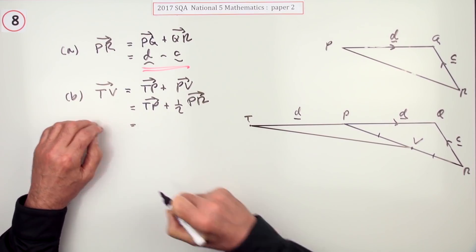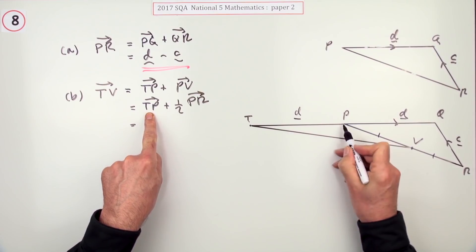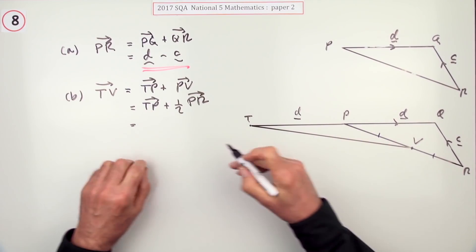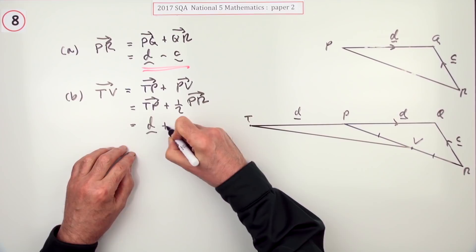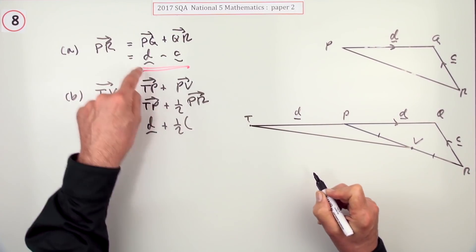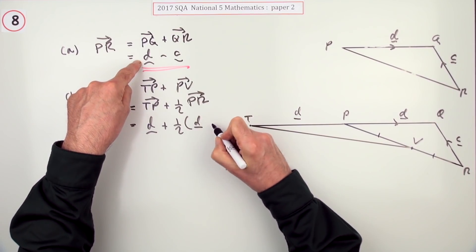Now I can just fill in the bits. TP it said was the same length same direction, so TP is still the move d. PR was made up of two parts so I better put it in a bracket there.